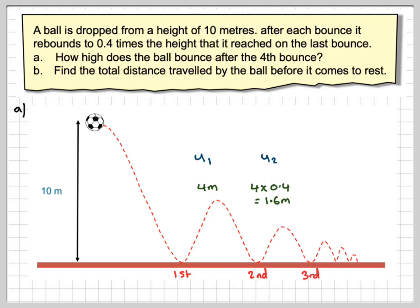And then the next one will be 4 times 0.4 squared, which is 0.64, so this one will be 0.64. And then this is the fourth bounce, and we have to find this height here. But the general term of this geometric sequence, un, is going to be the first term, which is 4 times 0.4 to the n minus 1. Notice that the first term is not 10. We'll look at that in a minute.